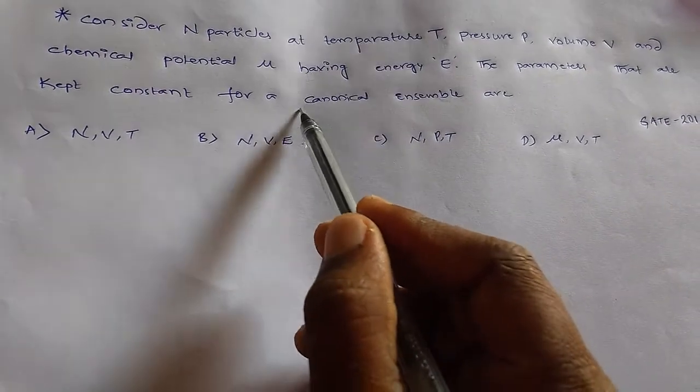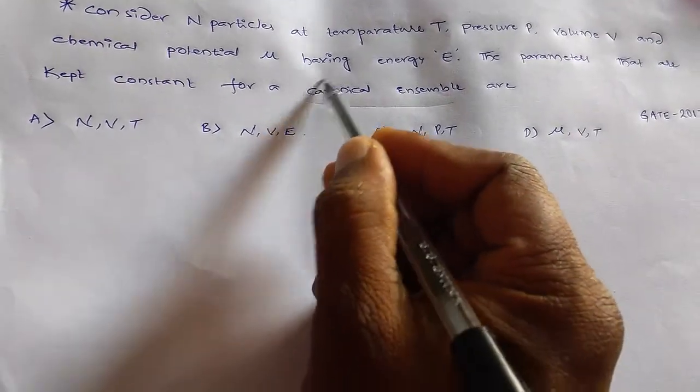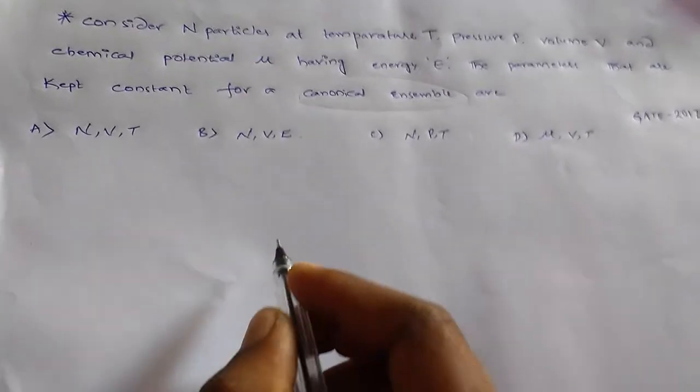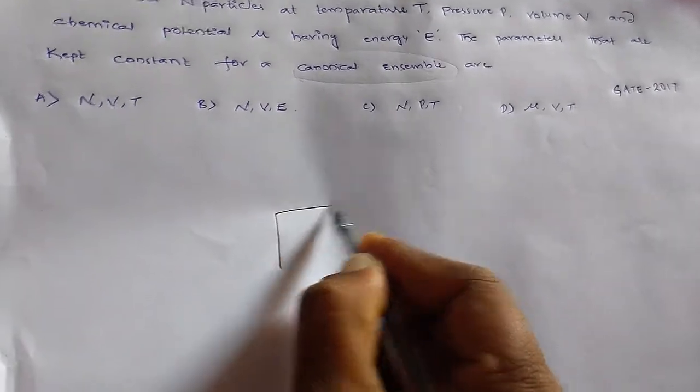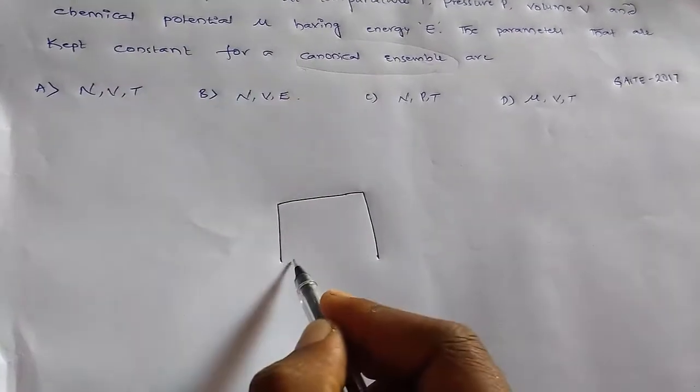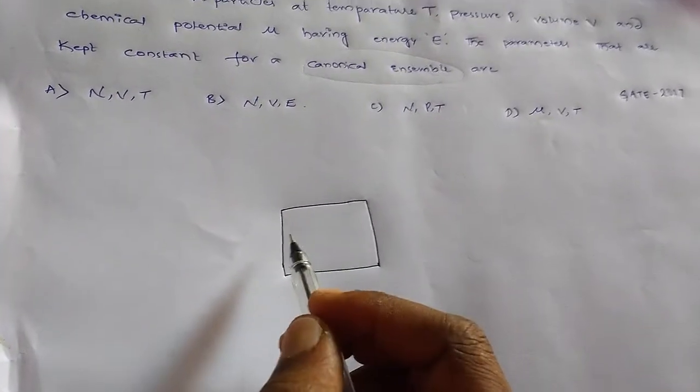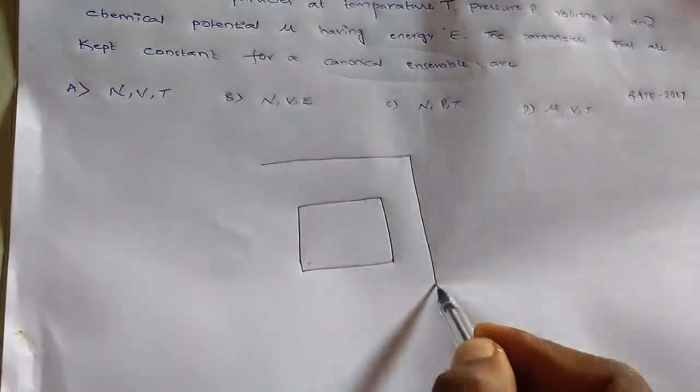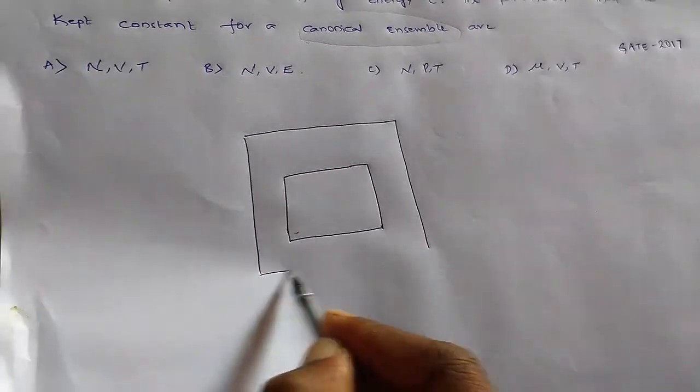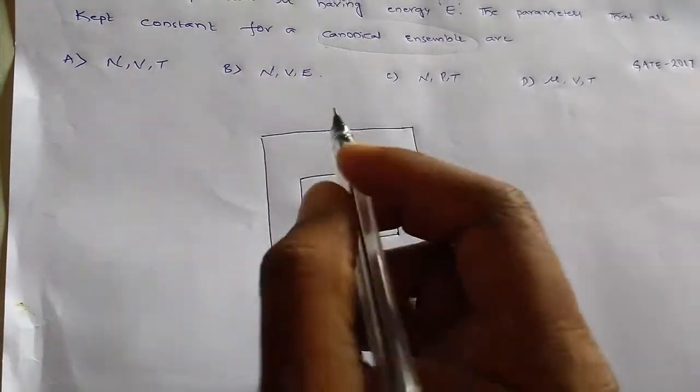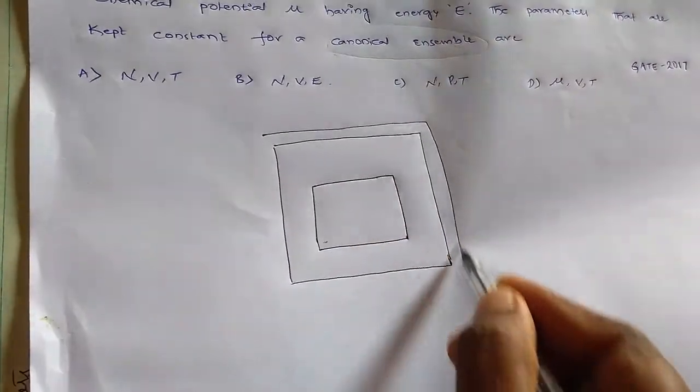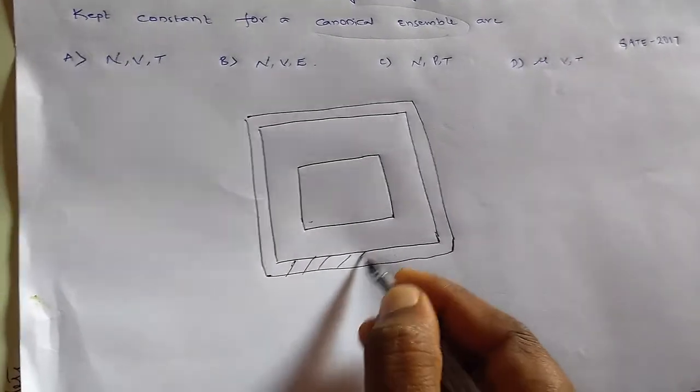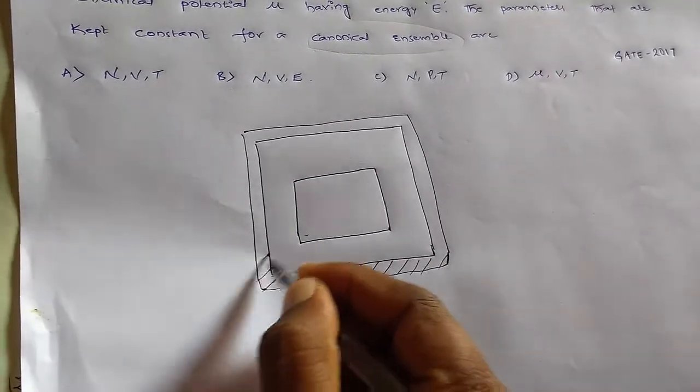First, we should consider canonical ensemble. Canonical ensemble is a statistical ensemble in which a system gets an equilibrium with heat bath at a constant temperature and by the conservation of particles. So this is a mechanical ensemble or statistical ensemble - that is canonical ensemble.